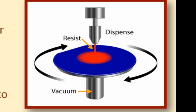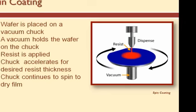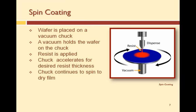Once the resist is deposited on the surface, the chuck accelerates to a specific spin speed called the casting speed. The faster the spin speed, the thinner the resist. Once at the casting speed, the chuck continues to spin to throw off any remaining solvents in the resist.